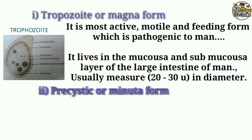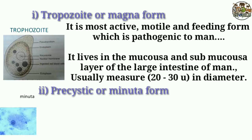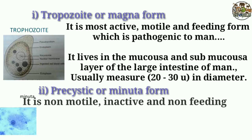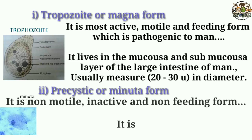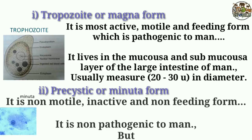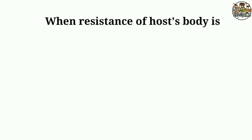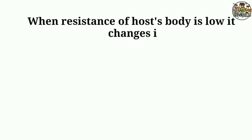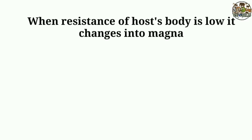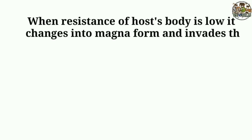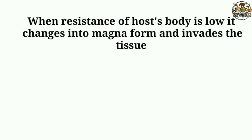The pre-cystic or Minuta form is non-motile, inactive, and non-feeding. It is non-pathogenic to humans. However, when the resistance of the host body is low, it changes into the Magna form and invades the tissue of the intestine.